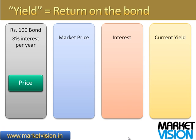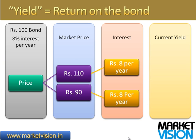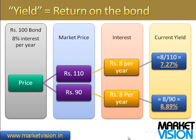Let's take a simple example. Take a 100 rupee bond that pays 8% interest per year. Consider two scenarios of price: one is 110 rupees and one is 90 rupees. The interest you get — whether you paid 110 rupees or 90 rupees for that bond — is exactly 8 rupees per year, because the coupon is always on the par value of 100 rupees. The yield is straightforward: 8 rupees divided by the amount you paid. That means 8 divided by 110 equals 7.27% for the 110-rupee bond, or 8 divided by 90 equals 8.89% in the other case.